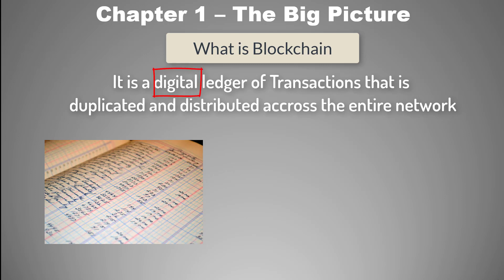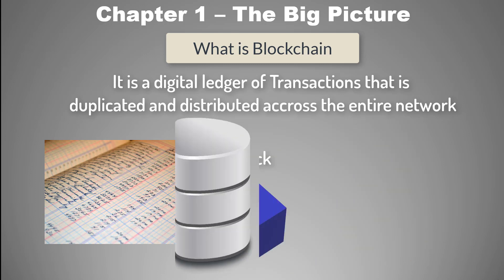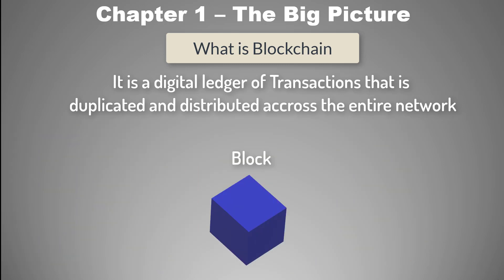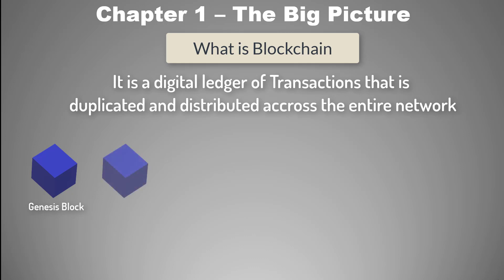So instead of a paper register, these transactions should be recorded on some software, maybe a database. Well yeah, I mean of course normally you would think like that, but in the world of blockchain, transactions are recorded on something called a block. The first block that was ever created in the history of Bitcoin blockchain is called the Genesis block, and then the second block, and then the third block, and so on.